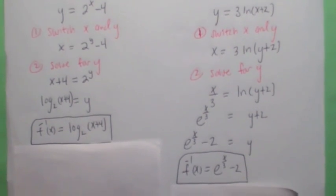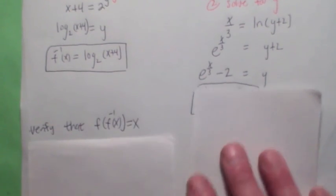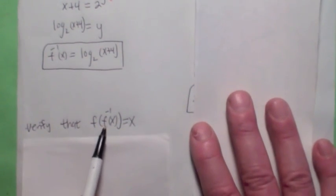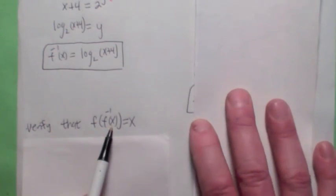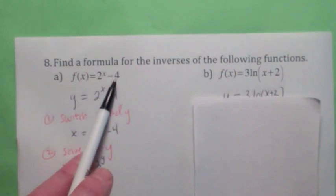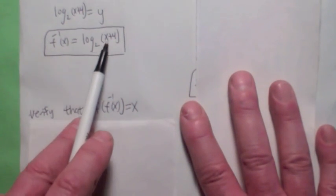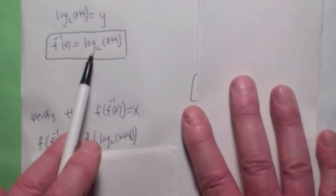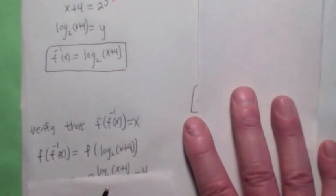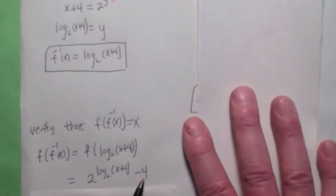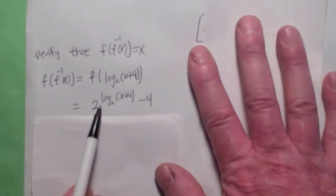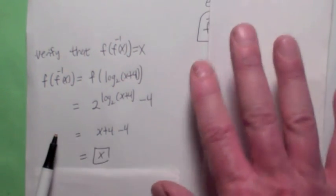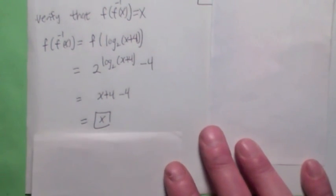You can actually verify that they're inverse functions by showing that the composition is x. The function was 2 to the x minus 4, and the inverse function is log base 2 of x plus 4. So f of f inverse becomes f of log base 2 of x plus 4 — it raises 2 to that power and subtracts 4. The 2 cancels with the log base 2, giving x plus 4 minus 4, which is just x. You can look at the composition of these two functions and get x back.